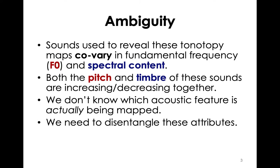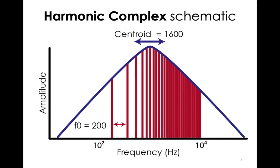The goal of this study was to disentangle these attributes. Here's a schematic of our stimulus manipulations with frequency content plotted on a log axis. We're using harmonic complex tones — the red lines are the harmonics. Increasing or decreasing the spacing between these harmonics increases or decreases the fundamental frequency, which increases or decreases the pitch of the sound. The overall spectral content is controlled by how we filter the sound, shown in blue. If we shift this envelope to the right, it shifts the spectral centroid, giving more energy to higher frequencies and resulting in a higher or brighter timbre percept. Shifting the envelope to the left gives more energy to lower frequencies, resulting in a lower or duller timbre percept.